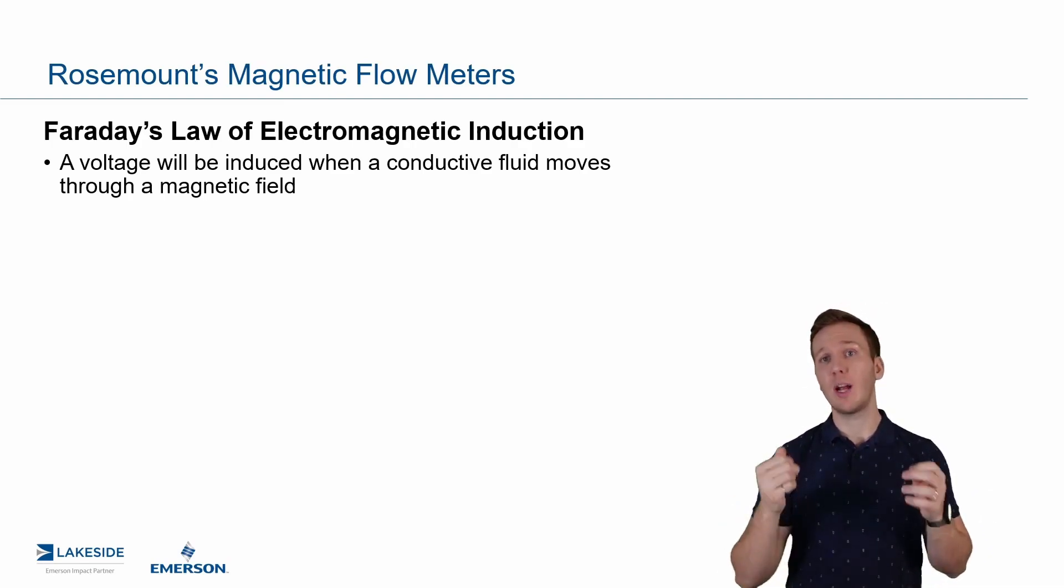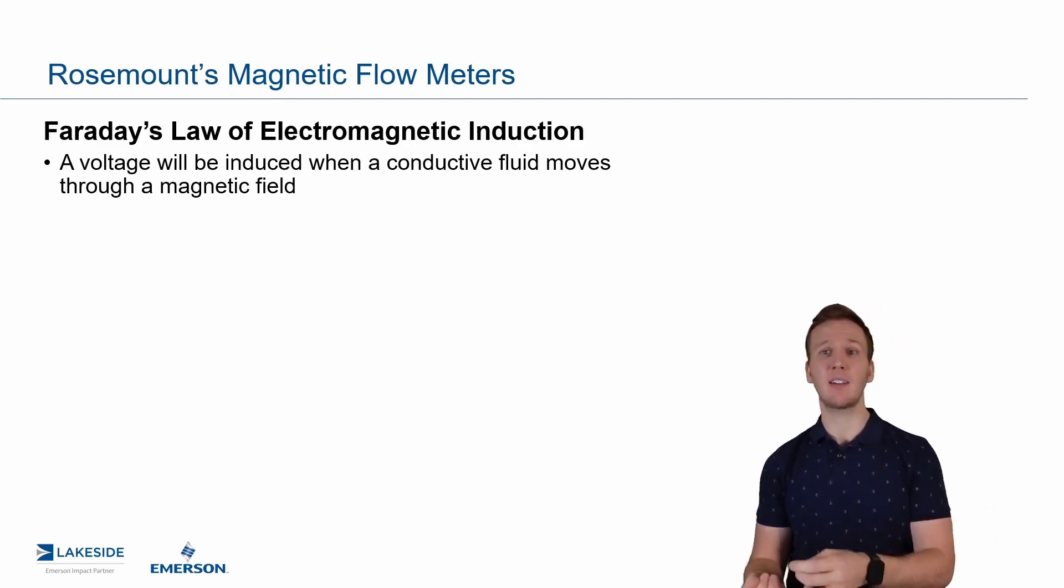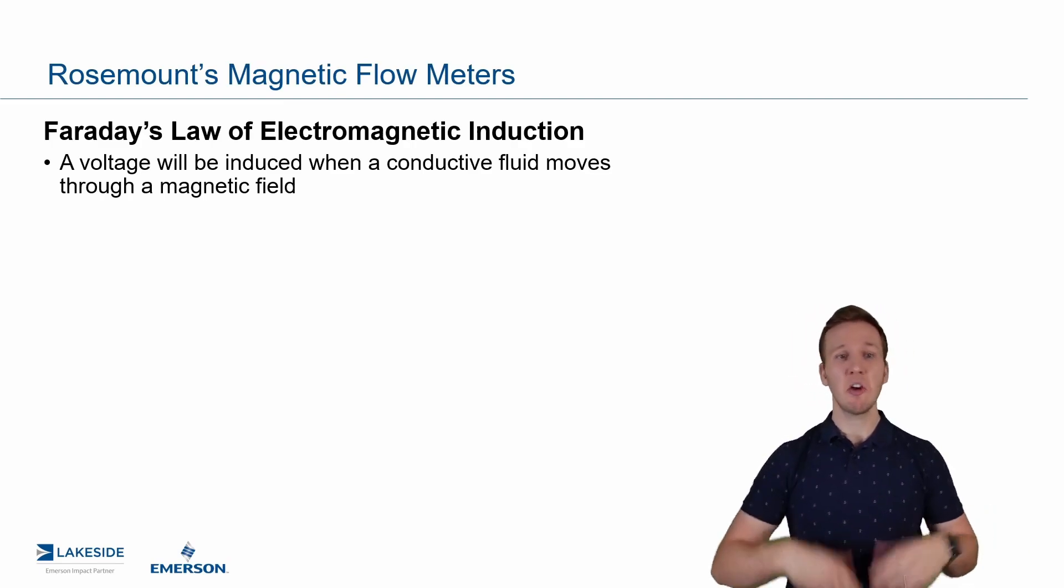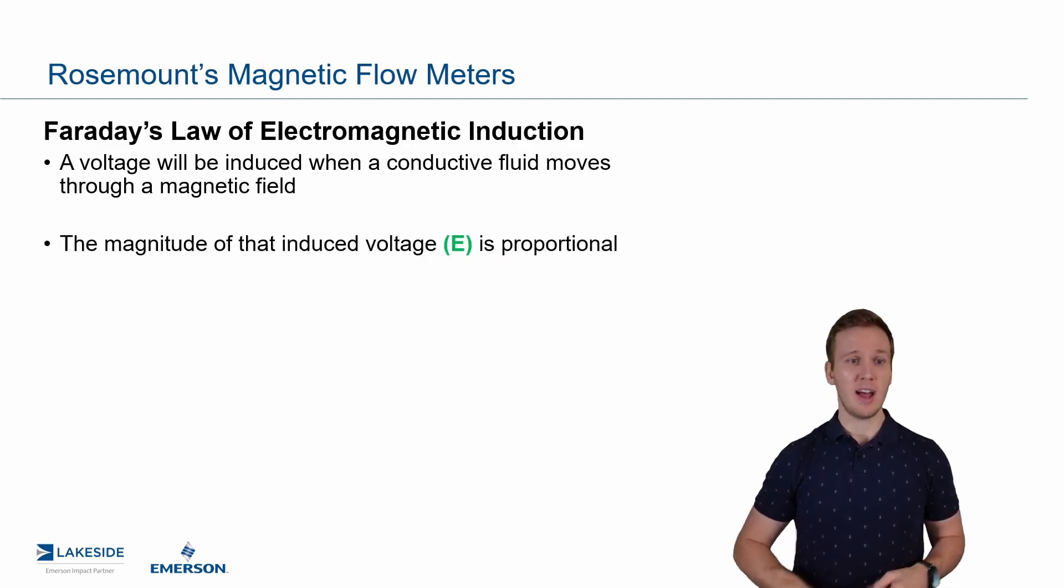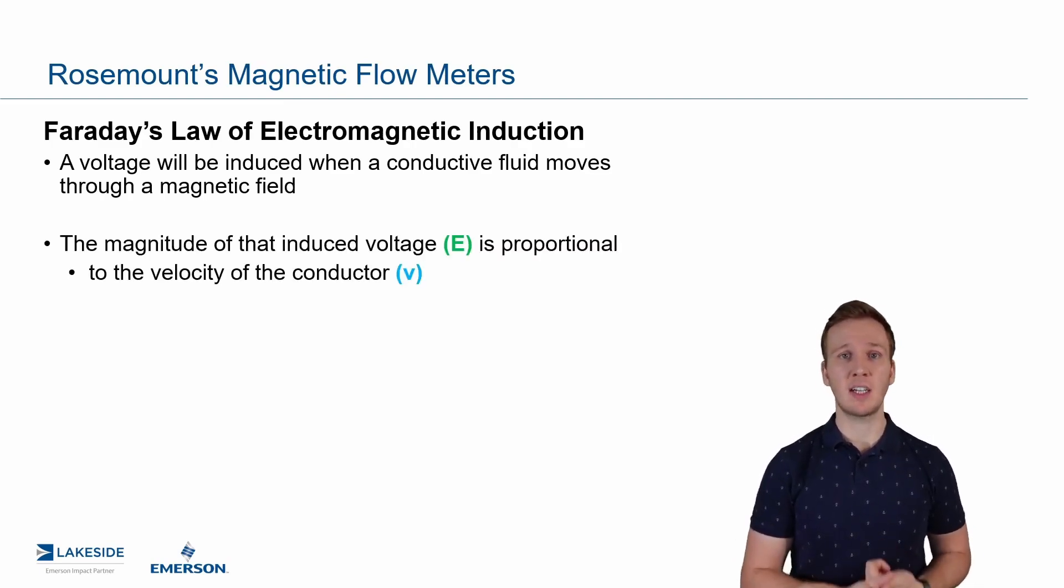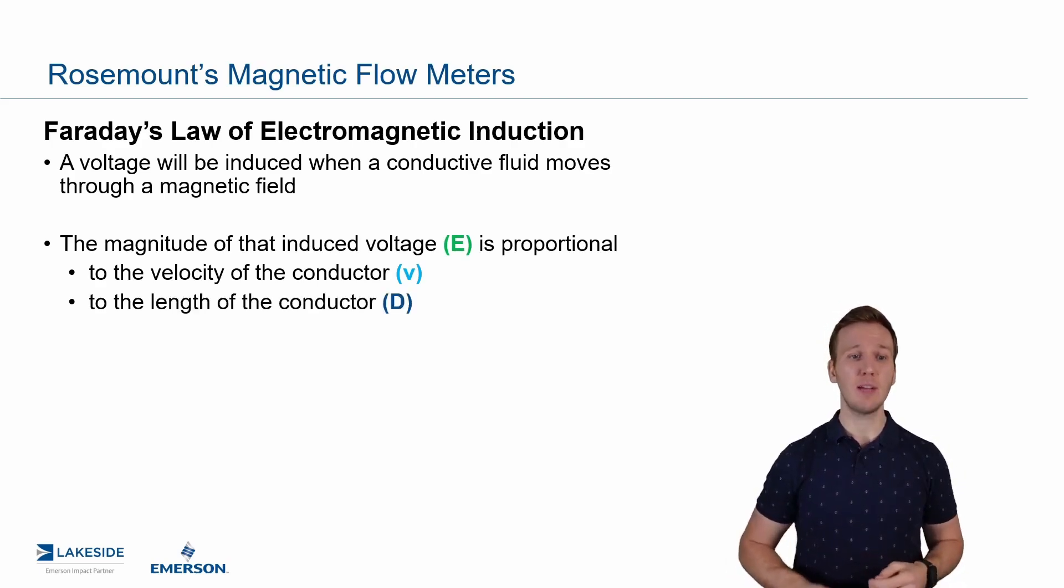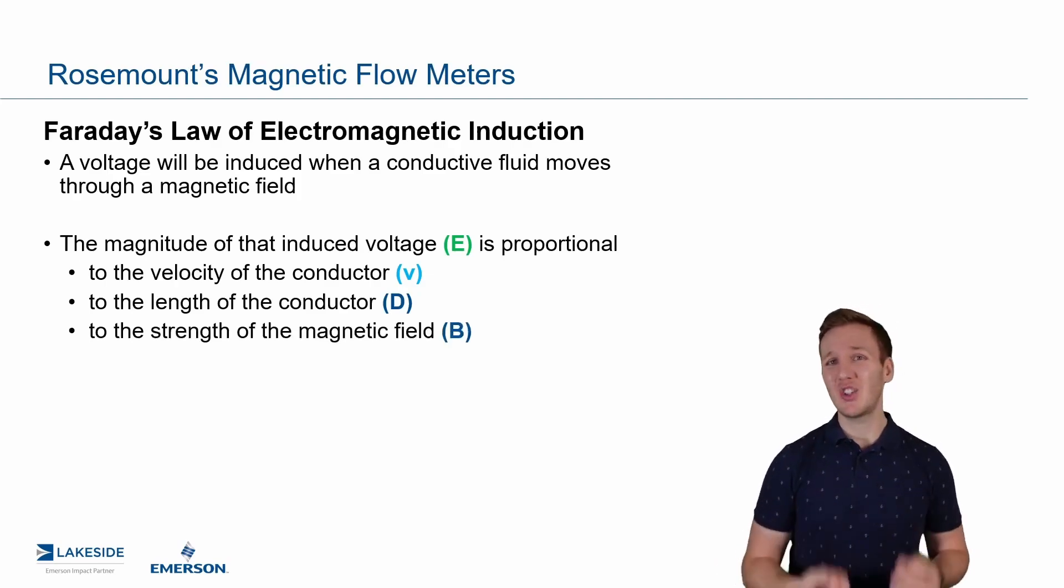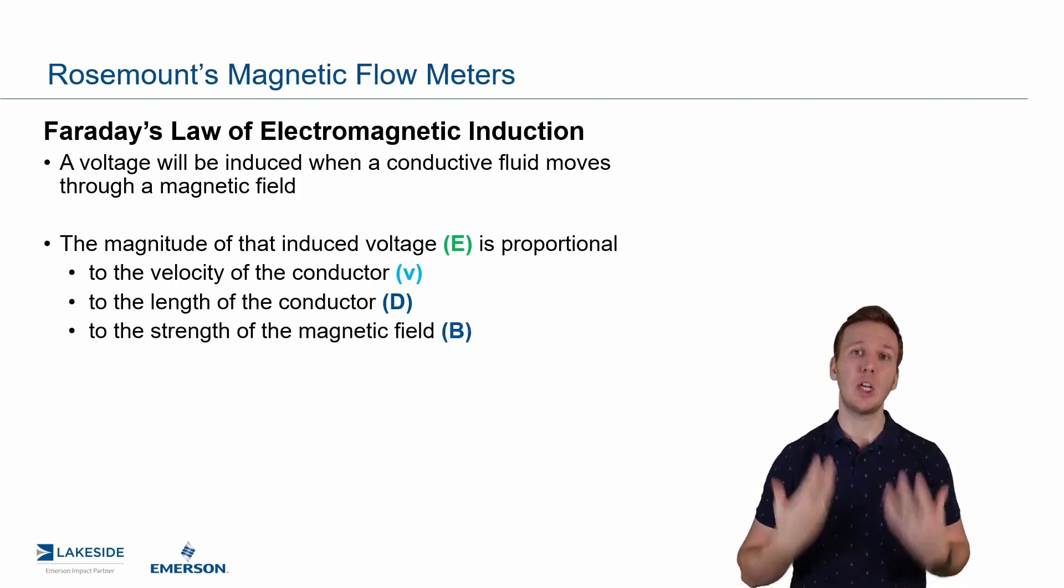So how does a magnetic meter work? We create a magnetic field. We then put that conductive fluid through that magnetic field and measure the induced voltage. And that induced voltage is directly proportional to the velocity of the conductive fluid, so how fast it's traveling, the length of the conductor, which is basically how big our pipe is or how big our magnetic flow meter is, and then the strength of that magnetic field, which is something that we know.